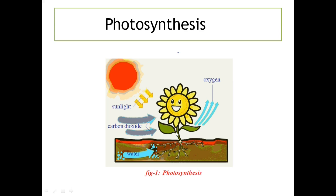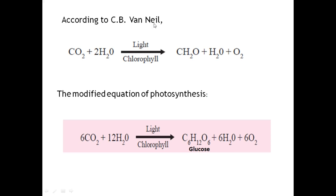There are several steps in photosynthesis and several intermediary compounds are formed. Scientists tried to formulate a simple equation for about 200 years, and finally in 1931 a scientist called C.B. Van Nail proposed a simple equation: carbon dioxide plus water, in the presence of sunlight and chlorophyll, gives rise to carbohydrate, water and oxygen. That is: CO₂ + H₂O → CH₂O (carbohydrate) + H₂O + O₂.